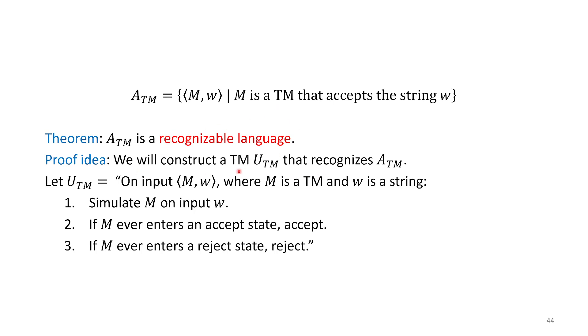To do this, we're going to make a machine that recognizes it. I'm going to call it UTM for universal Turing machine, because if we can build this machine, it can take as input a description of another Turing machine—think of this as a computer program—and some input for that, and then simulate it. This UTM can simulate any Turing machine, which is quite powerful.